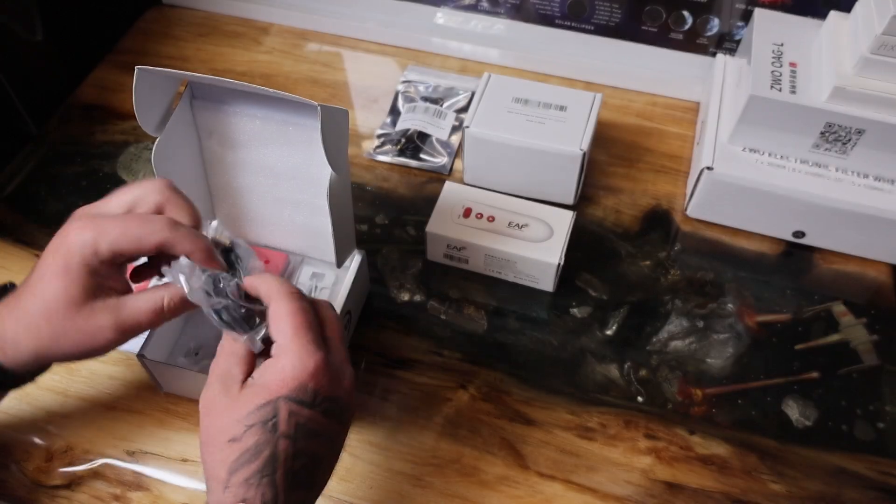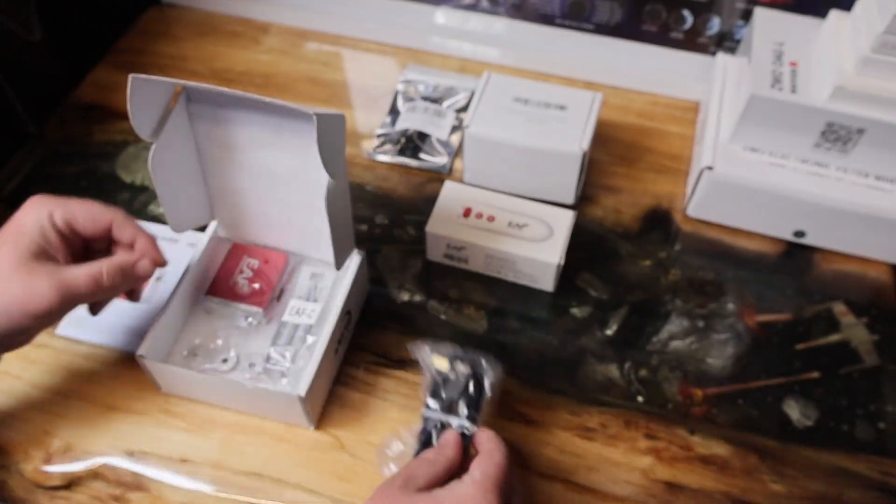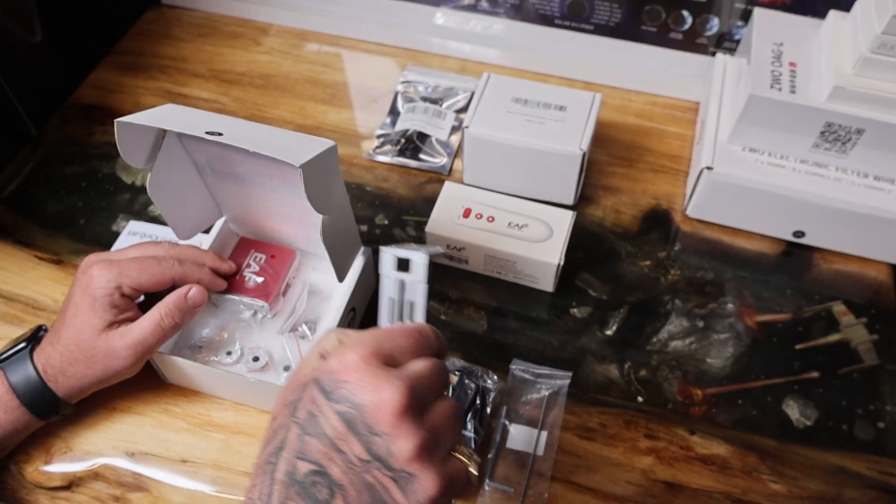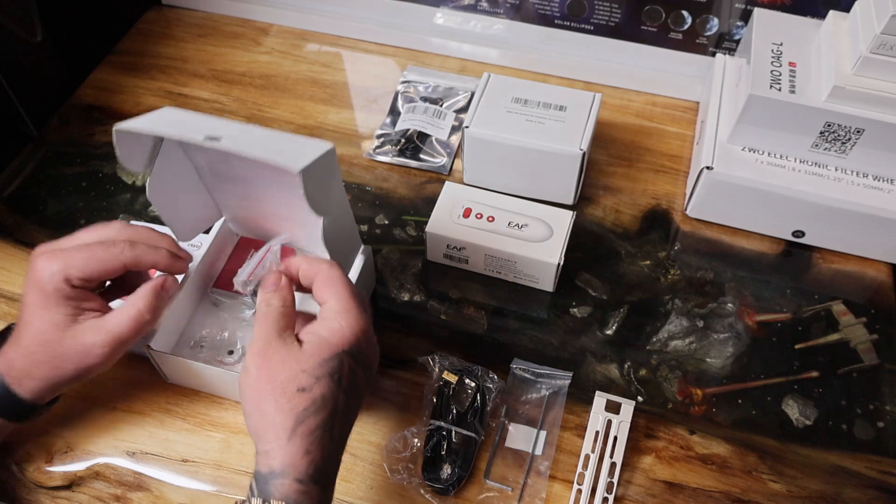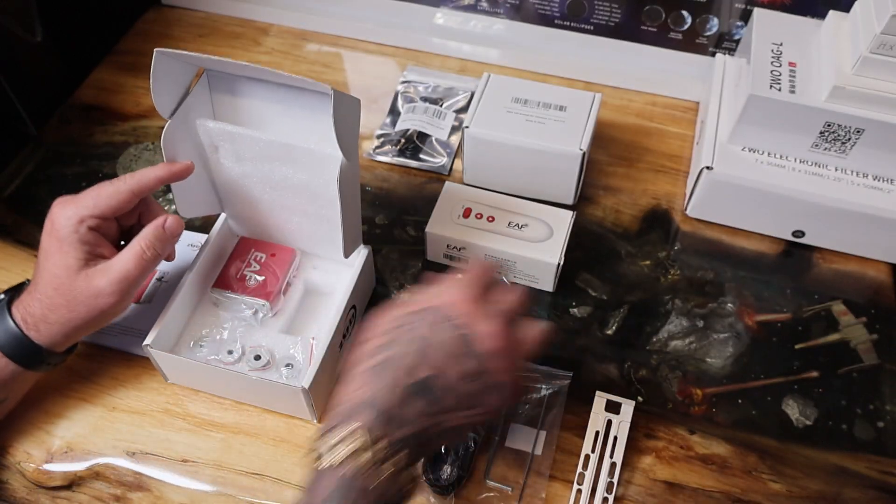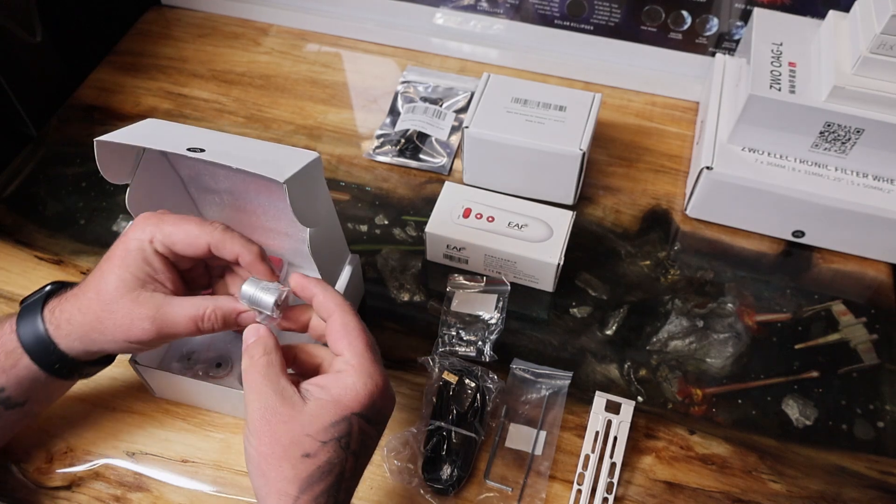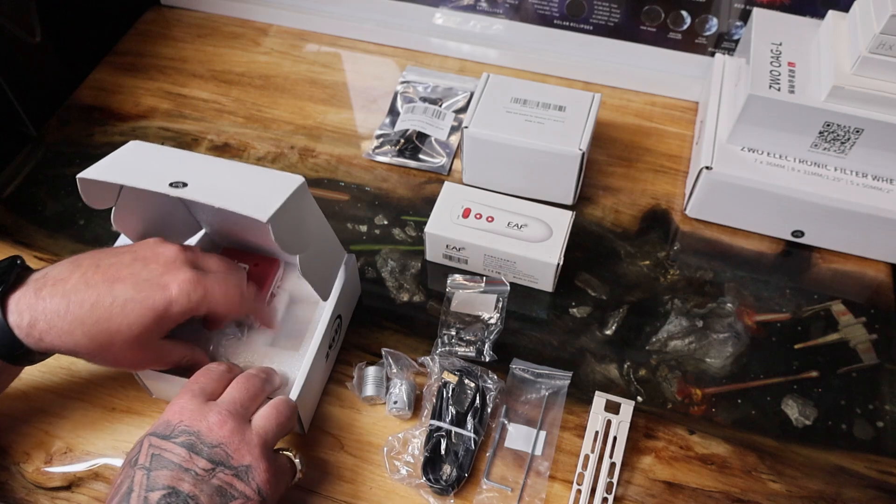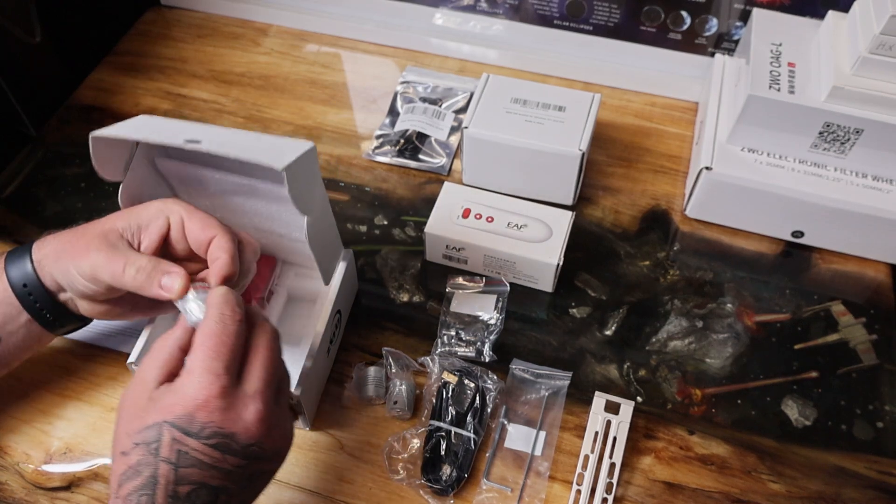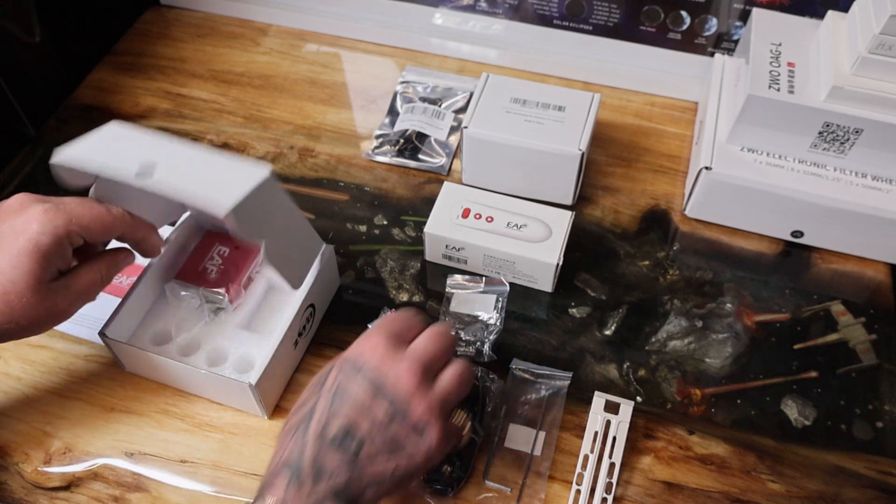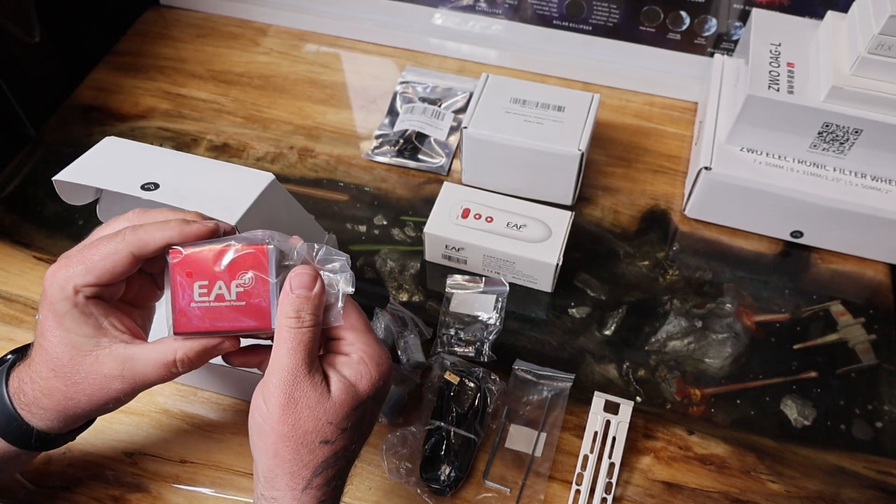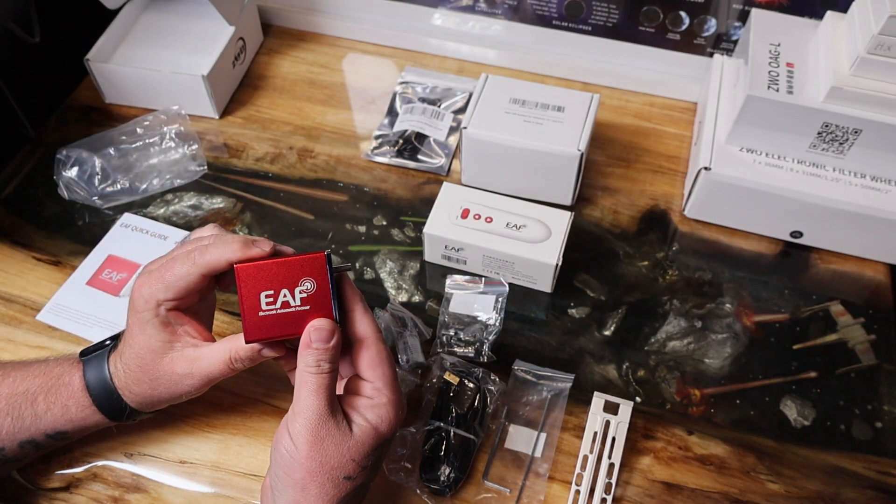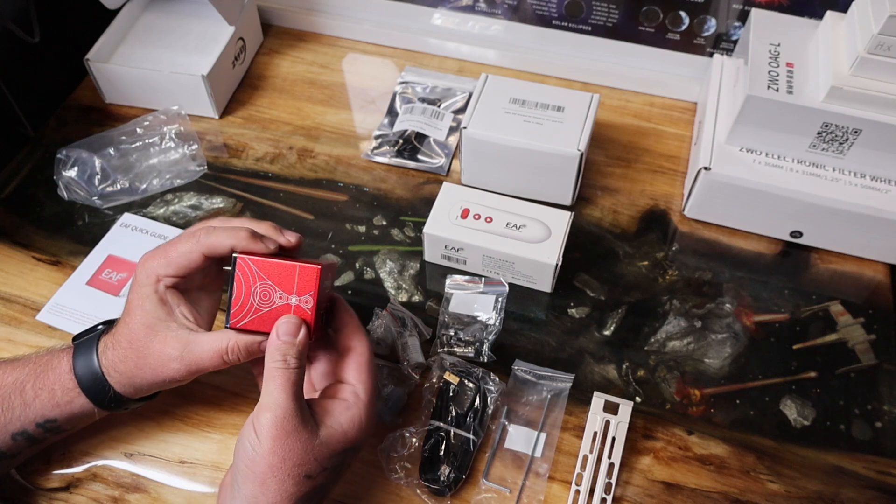So straight away we've got an instruction manual, just an installation guide really, and we've got a USB 2.0, some Allen keys, a bracket, little bolts, then we've got the spacers so it fits all different types of scope. There we go, so yeah all different sizes - there's four different sizes in there. Pull all of those out and then we've got the actual main piece itself. Let's move that box aside.